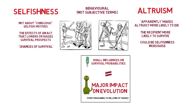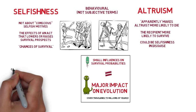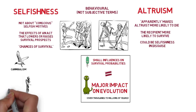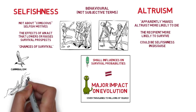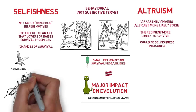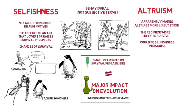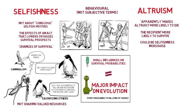Examples of selfish behaviors include cannibalism exhibited by black-headed gulls that swallow each other's chicks, the female praying mantis that bites off its mate's head during copulation, and emperor penguins that push each other into the water for fear of being eaten by seals. It could also involve not sharing valued resources like food, territory, or sexual partners.